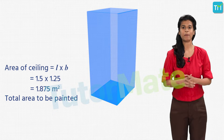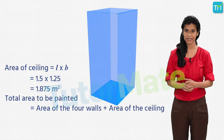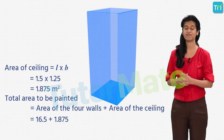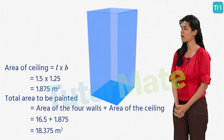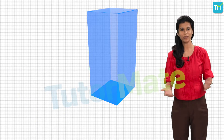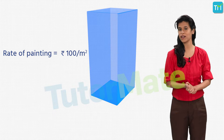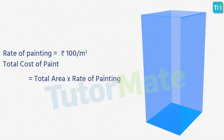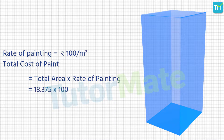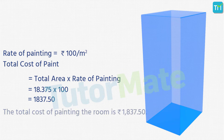The total area to be painted is the sum of the area of the 4 walls and the area of the ceiling: 16.5 + 1.875 = 18.375 square meters. To find the total cost of paint, we multiply the total area by the rate of 100 rupees per square meter: 18.375 × 100 = 1837.5 rupees. Therefore, the total cost of the paint needed for the room is 1837.5 rupees.